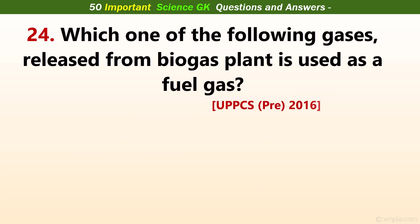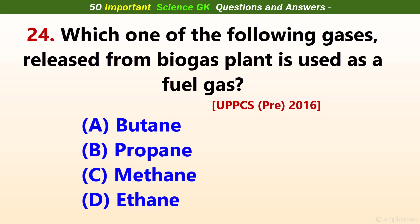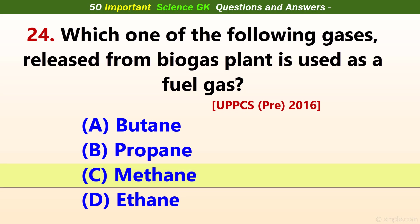Which one of the following gases released from a biogas plant is used as a fuel gas? Answer C: Methane.